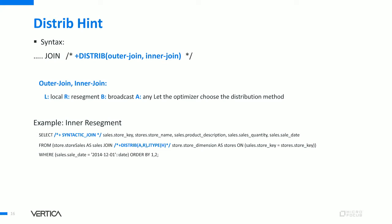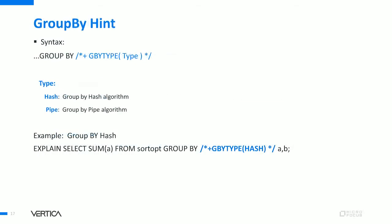The DISTRIB hint controls how to force the inner or outer side of a join operator to be distributed using broadcast or resegment. It takes two parameters: first is the outer side, second is the inner side. For example, DISTRIB A,R after the JOIN keyword forces resegment on the inner side while leaving the outer side to the optimizer. The group-by hint, GBtype, forces the query plan to pick group-by hash or group-by pipeline. As shown in the example, GBTYPE HASH placed just after the GROUP BY clause forces the query to use group-by hash.